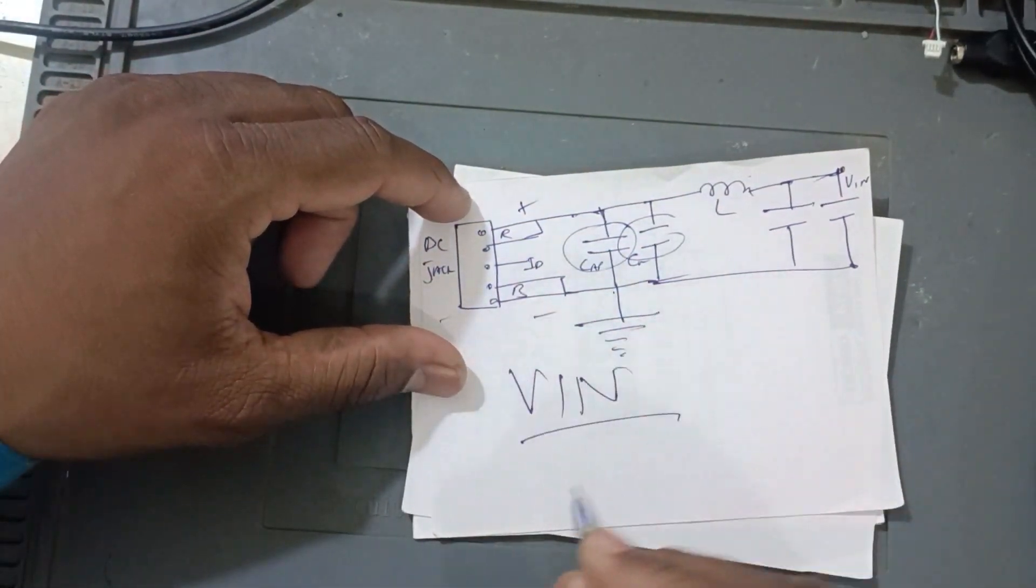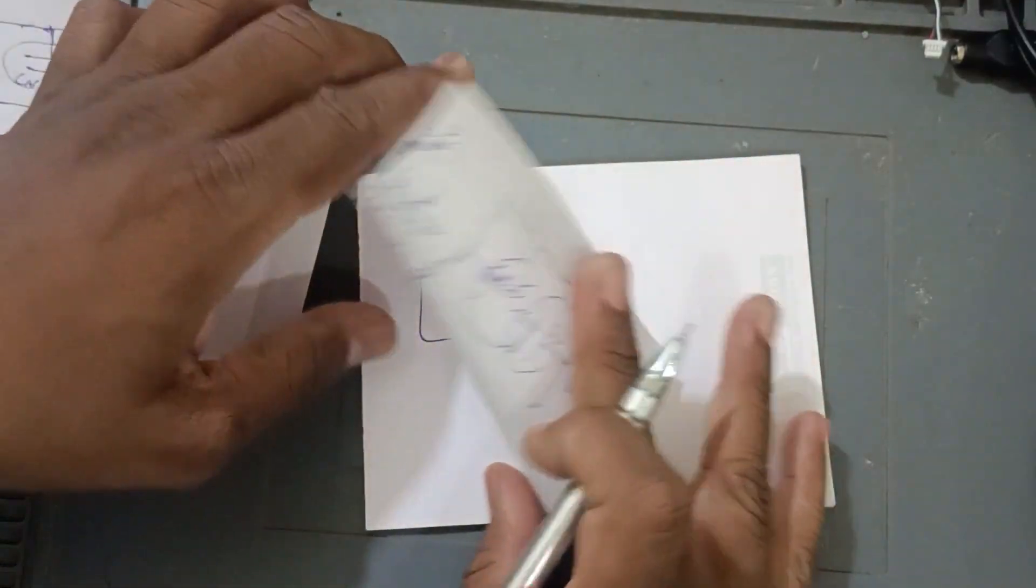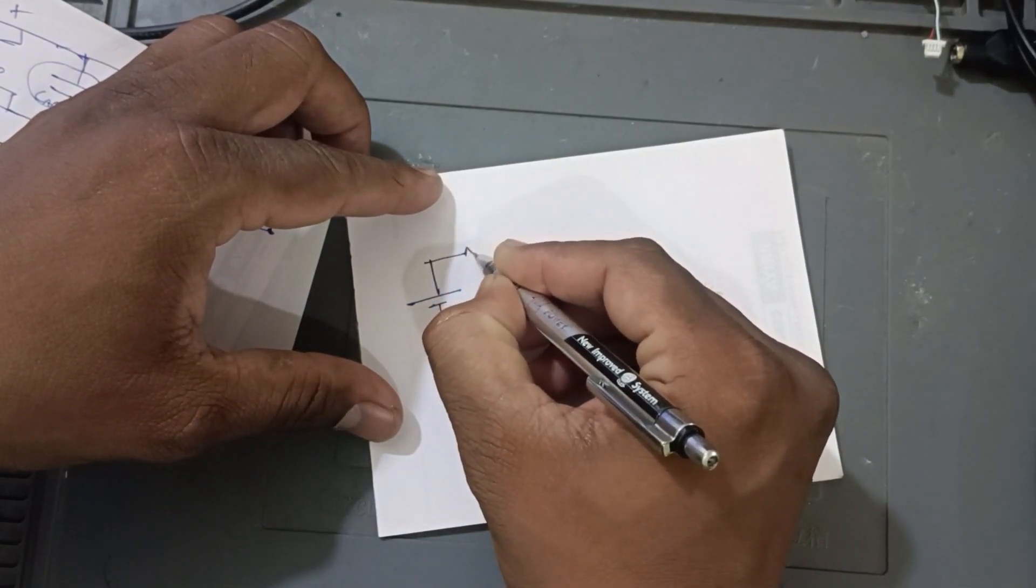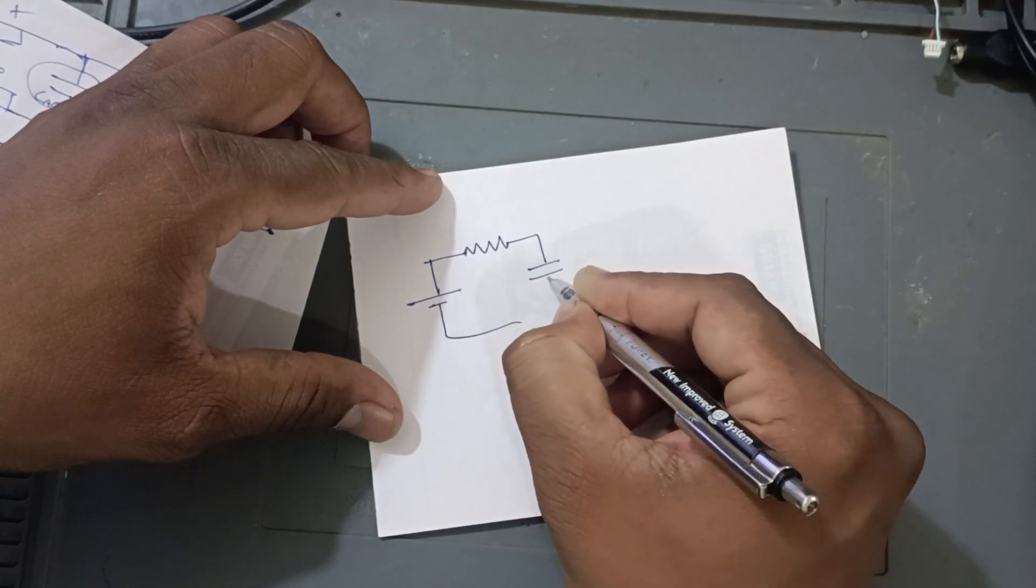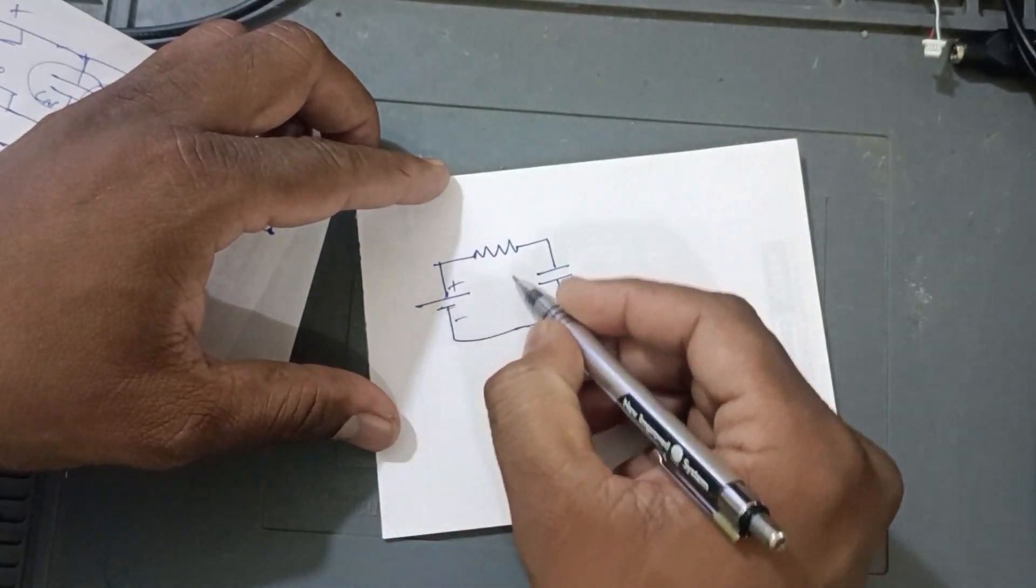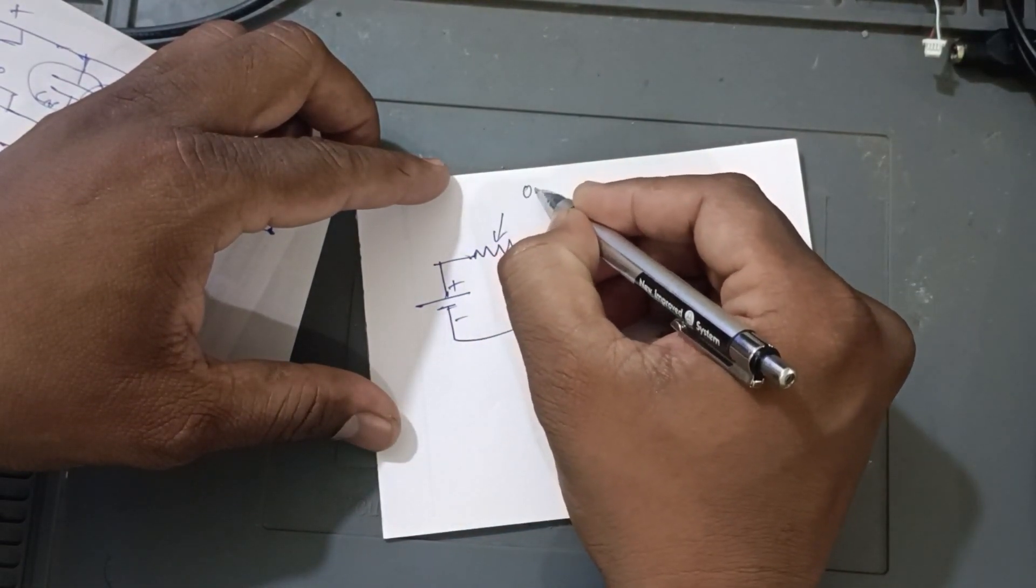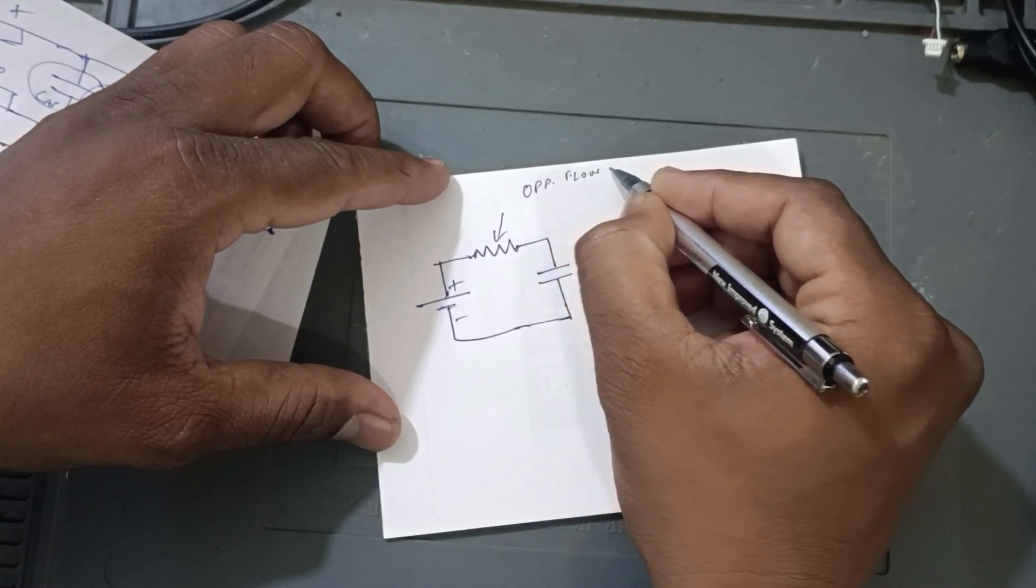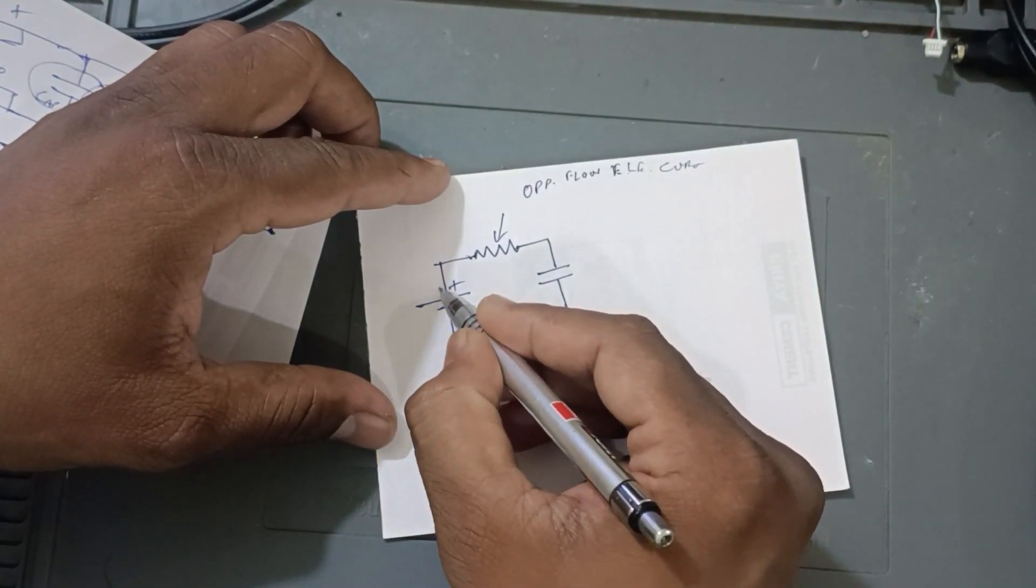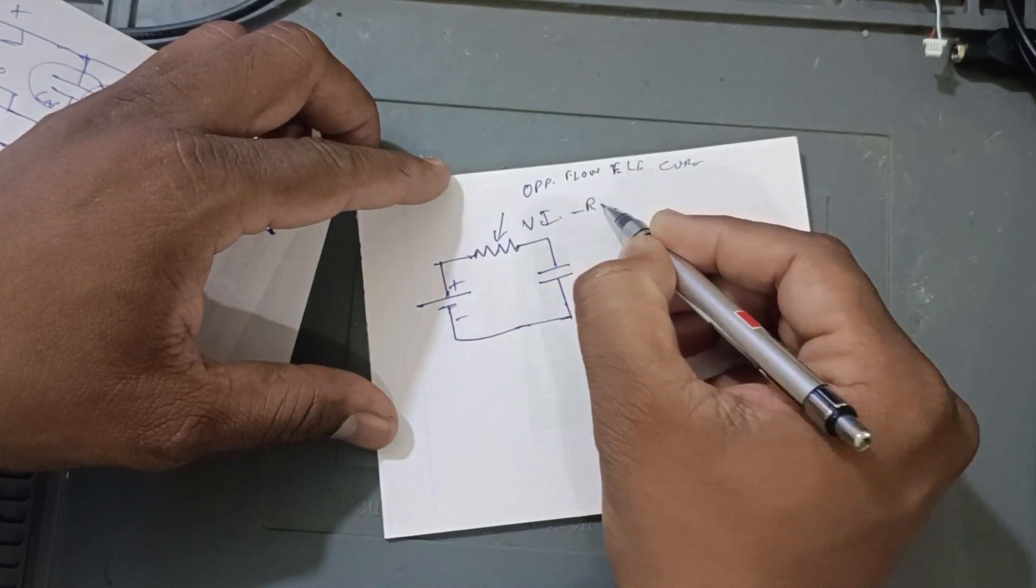In simple manner, I will explain you. This is positive and negative. Right. In a loop, if you give, see, I will write down a circuit, positive circuit. Here is the resistor and here is the capacitor. In a loop, if you give the voltage, positive and negative, this resistance, what it does? Because it opposes the flow of electrons. It opposes the flow of electrons, means current. Right. In a closed circuit, here, voltage and current will reduce.